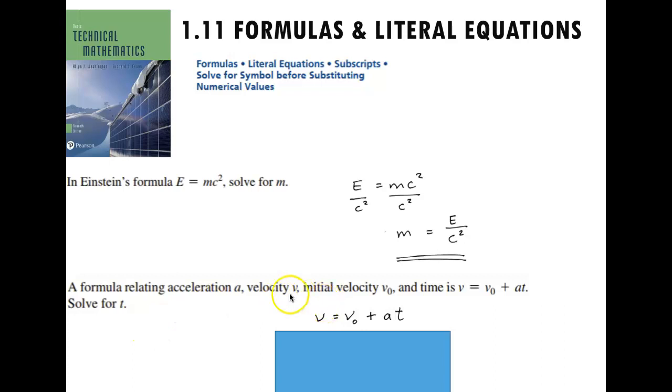Now the second formula, this deals with acceleration and velocity, and you're also given initial velocity and time. So you've got four different unknowns here. So this is our formula, v equals v sub nought plus a times t. And this time we're asked to solve for t. We want to get this t by itself.